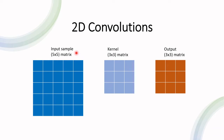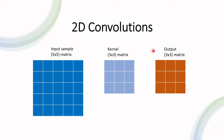What we have here is an input sample which is supposed to depict an image — only it's much smaller than what an image would actually be. It's a five by five matrix where each pixel has a value, and that's how the image is created. To apply the convolution we need something called a kernel, and in this example we have a kernel which is a three by three matrix. By applying this kernel onto the input sample we get an output matrix which is also, in this case, a three by three.